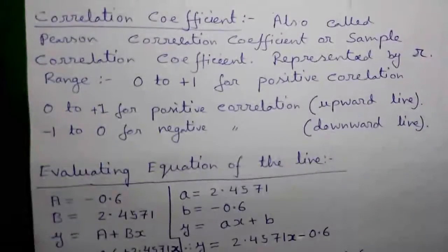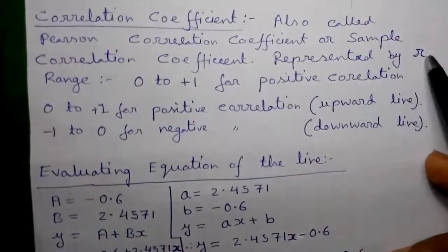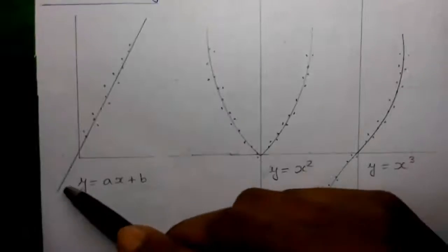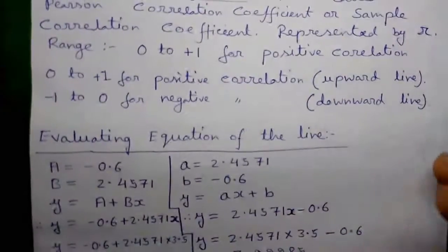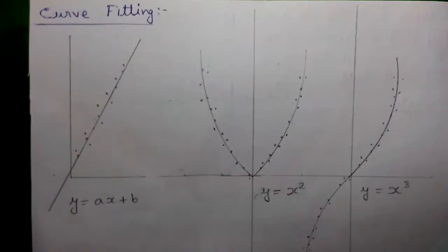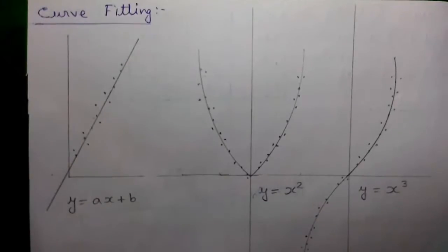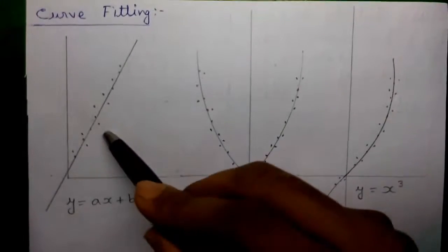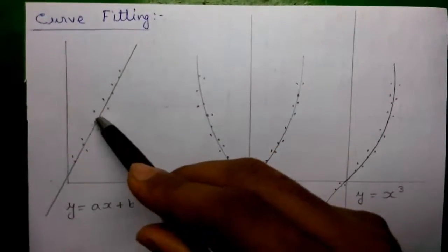Next is the correlation coefficient, also called the Pearson correlation coefficient or the sample correlation coefficient, represented by small r. Its range is from 0 to plus 1 for positive correlation — that is an upward line. If the line is upward, the correlation coefficient is positive. It is from minus 1 to 0 for negative correlation — that is a downward line. If the line is downward, the correlation coefficient is negative. The correlation coefficient value is important because it tells us whether our line will be upward or downward, and how fit our curve is. If the value is closer to positive 1, our line is touching the maximum number of points.